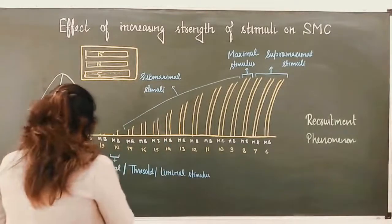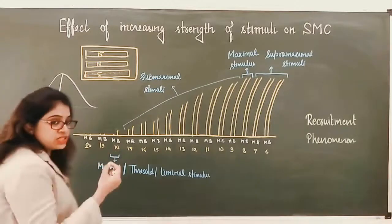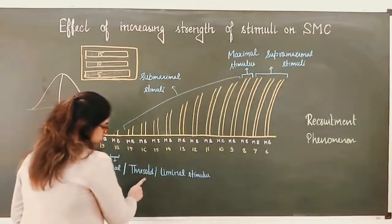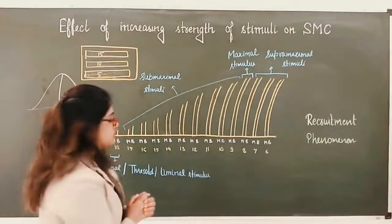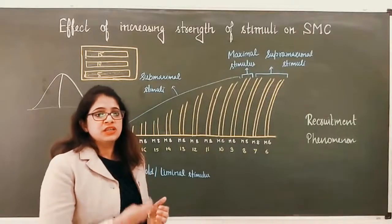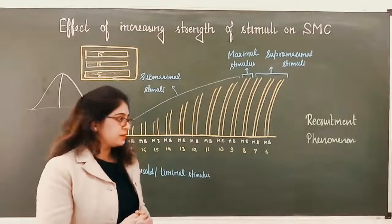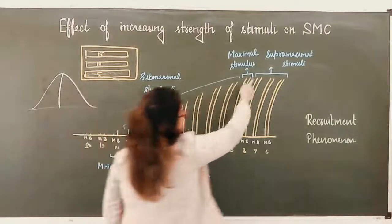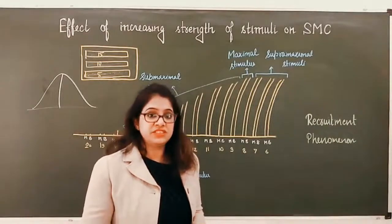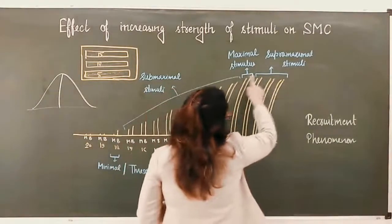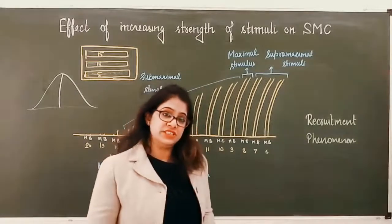The examiner may ask you for definitions. The minimum stimulus at which at least some response is produced is called the minimal, threshold, or liminal stimulus — it is liminal, not luminal. Maximal stimulus is the minimum stimulus at which the maximum response is achieved. We can see the maximum response is achieved in all four graphs, but the minimal stimulus at which the maximum response was first achieved is the maximal stimulus.